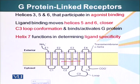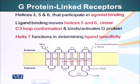Helix 2, 3, 4, 5 and 6. Helix 3, 5 and 6 participate in binding of the ligand. In this case, we have written agonist binding - I will tell you what agonist means later on. But basically, these helices 3, 5 and 6 participate in binding of the ligand.